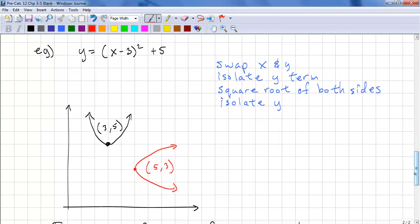Let's look at another complicated example. We have y is equal to x minus 3 squared plus 5. So that's a parabola. Or if you prefer, a quadratic. We swap x and y. So we have x equals y minus 3 squared plus 5. We isolate y. So x minus 5 equals y minus 3 squared. We take the square root of both sides. We have plus or minus square root x minus 5 equals y minus 3. And then we isolate y. So this is 3 plus or minus the square root of x minus 5. Now, because we have a plus or minus, this is no longer a function. This is a relation. So the inverse is a relation.